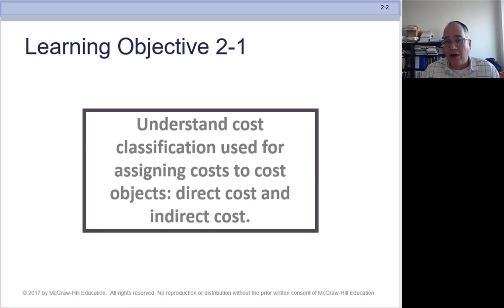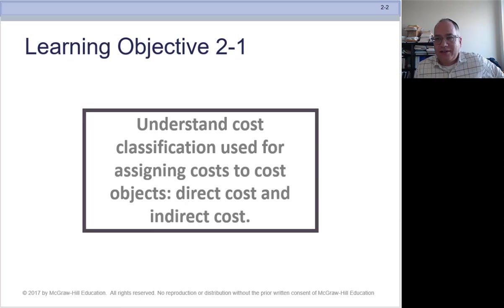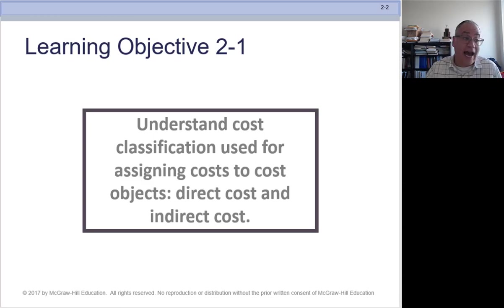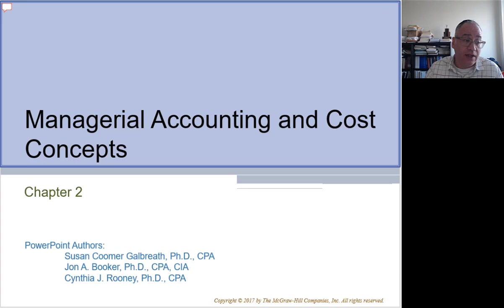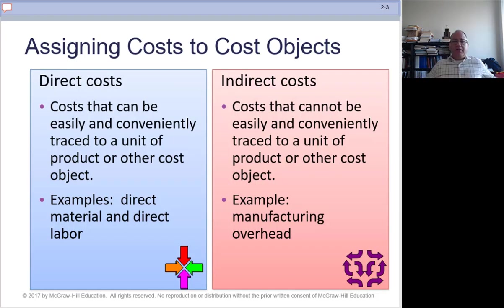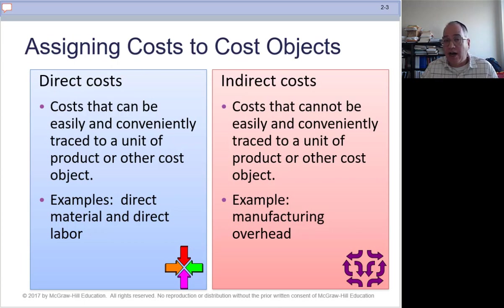We have two kinds of costs that we look at from this perspective. We're going to slice and dice costs in a lot of different directions today, because what we really want to do is understand how costs behave — that's going to be the next chapter. In order to understand that, we have to understand what different kinds of costs we have. So let's talk about direct and indirect costs. Direct costs can be easily traced to the unit that's produced, or whatever it is we're trying to trace the cost to. The two most common kinds of direct costs are called direct materials and direct labor.